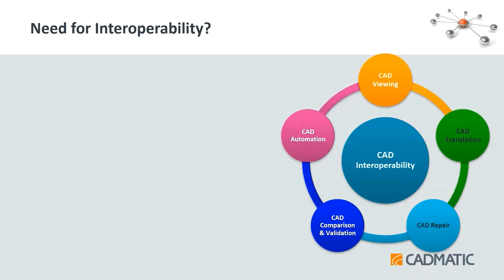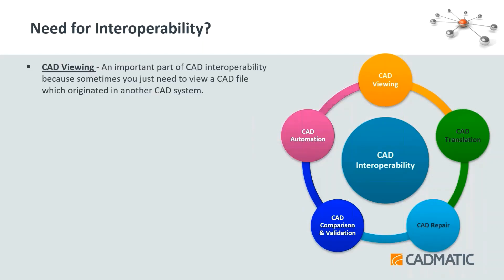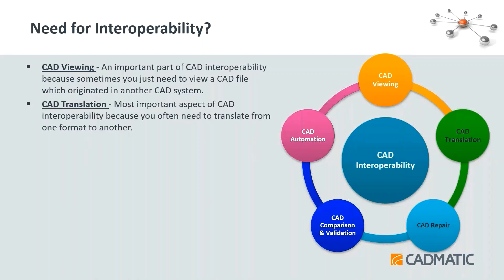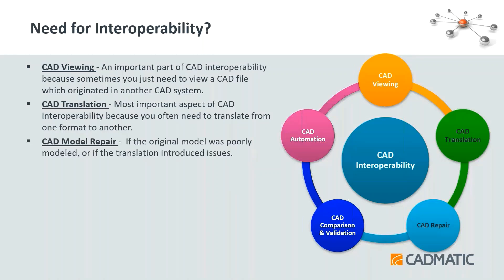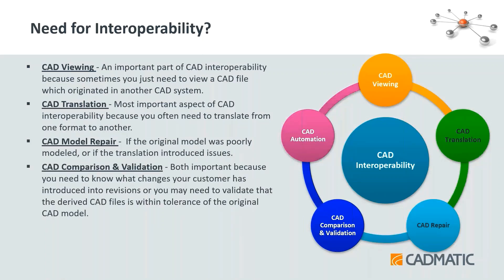Focusing now on the CAD side: for CAD viewing purposes, it is very important to be able to view a model originating from one software in another software, saving translation costs when converting files from one format to another so they can be opened in other systems. CAD model repair is needed if the originally built model is poor or not properly converted. CAD comparison and validation are crucial — you need to know what changes a customer has introduced in a revision, or validate the original file format received.